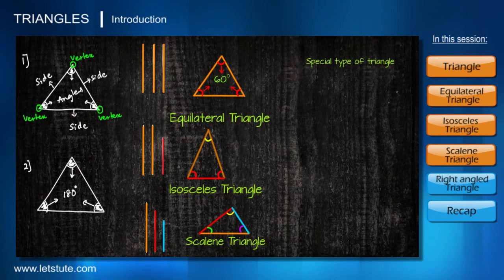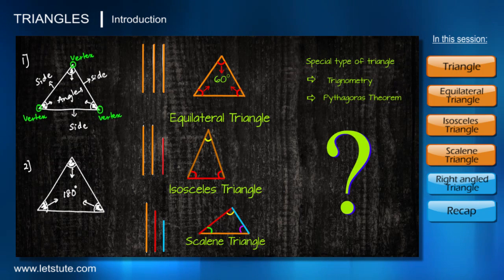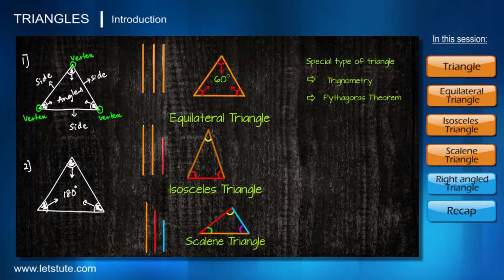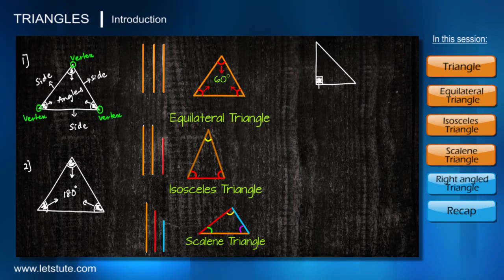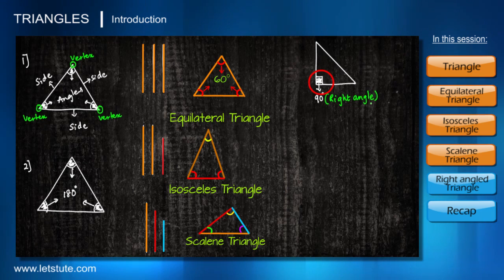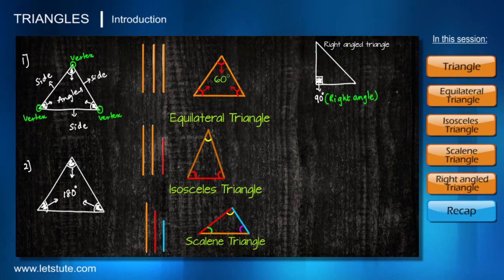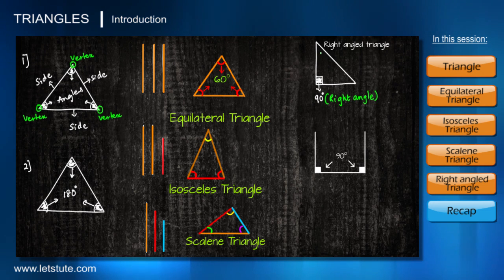Now let's learn about the most important and special type of triangle — one that many concepts like trigonometry and Pythagoras' theorem are based on. Yes, it is a right-angled triangle. An angle of 90 degrees is always called a right angle, so whenever any angle in a triangle measures 90 degrees, that triangle is called a right-angled triangle. Importantly, a triangle can contain only one right angle — if you try to include more than one, a triangle is not possible.